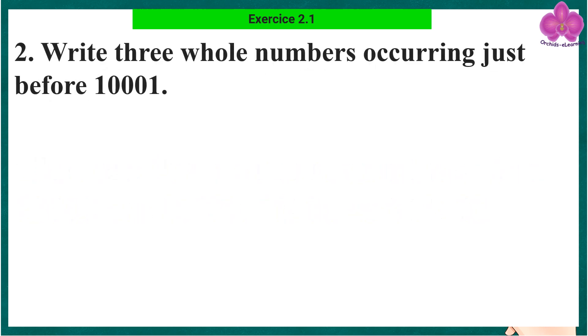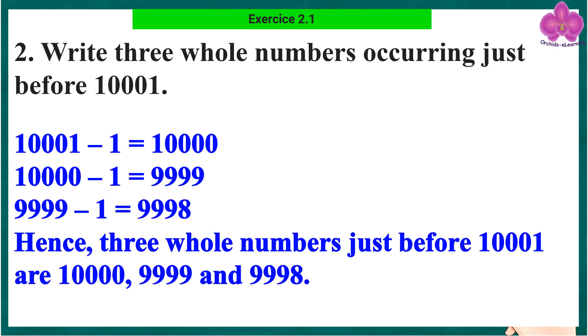Question 2: Write three whole numbers occurring just before 10001. 10001 minus 1 equals 10000, 10000 minus 1 equals 9999, 9999 minus 1 equals 9998. Hence, three whole numbers just before 10001 are 10000, 9999, and 9998.